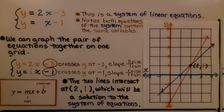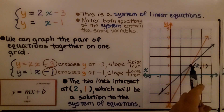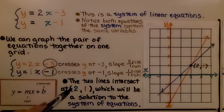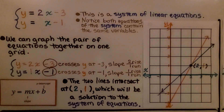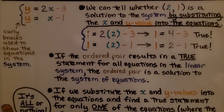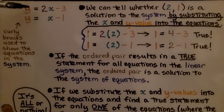Now we have these two lines. The two lines intersect at the point x equals 2, y equals 1, which is a solution to the system of equations. We can write a system of equations with curly braces to show the equations in the system, or just stack them on top of each other without curly braces, as you might see in your textbook.